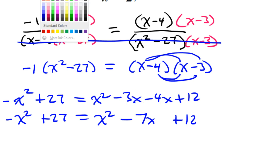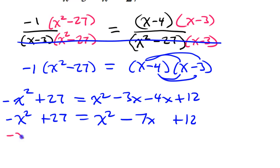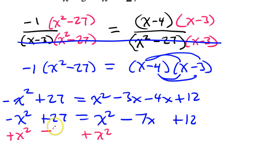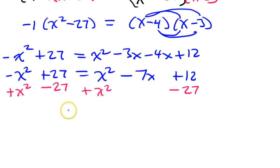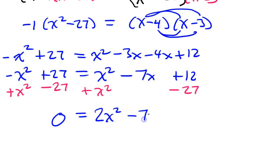I need to get everything on one side. I'm going to add x squared to both sides, and at the same time subtract 27 from both sides. On the left side, that will give me zero. x squared plus x squared is 2x squared, and I've got my minus 7x, and this will be minus 15.